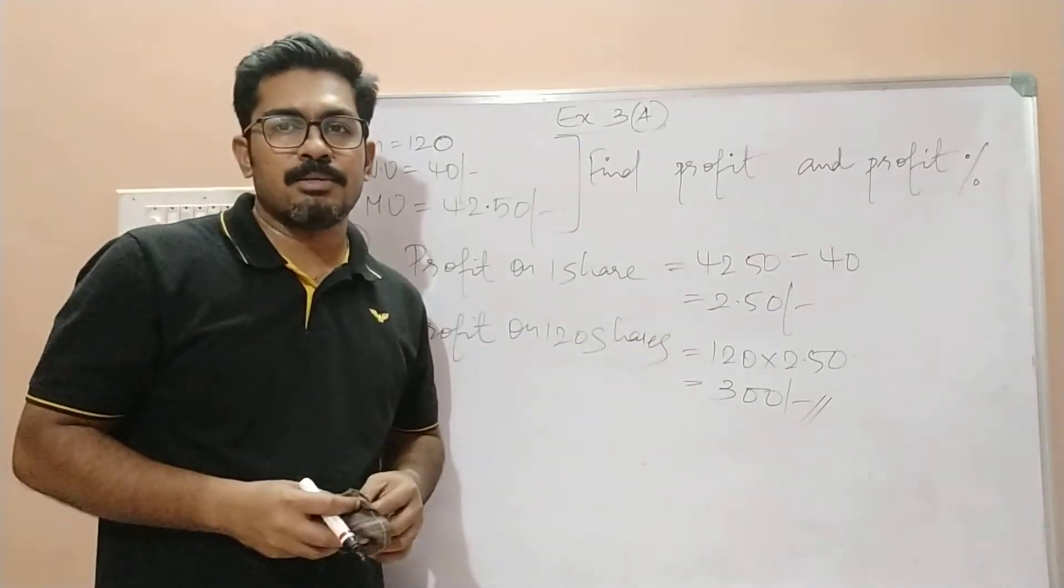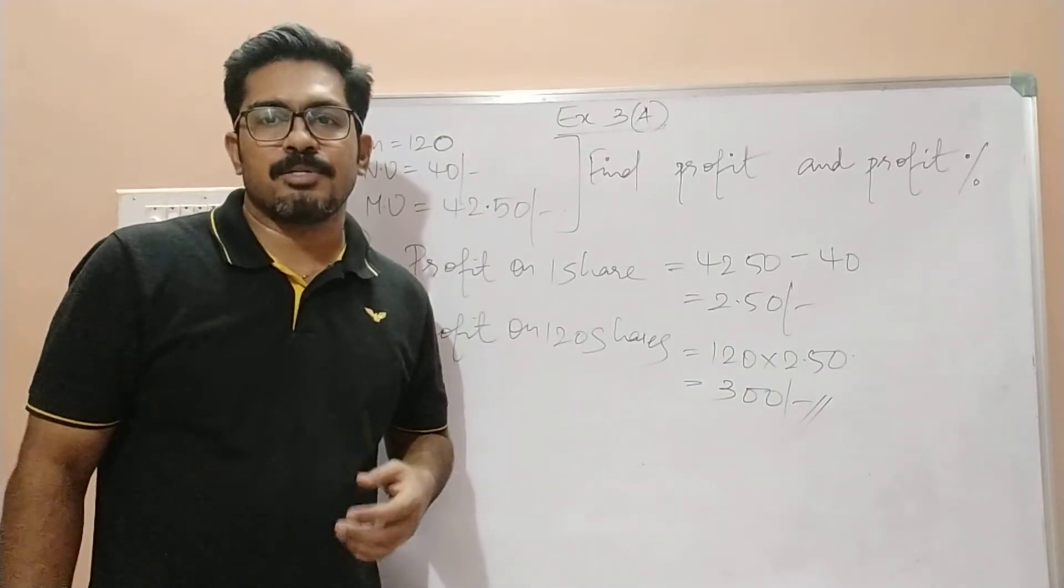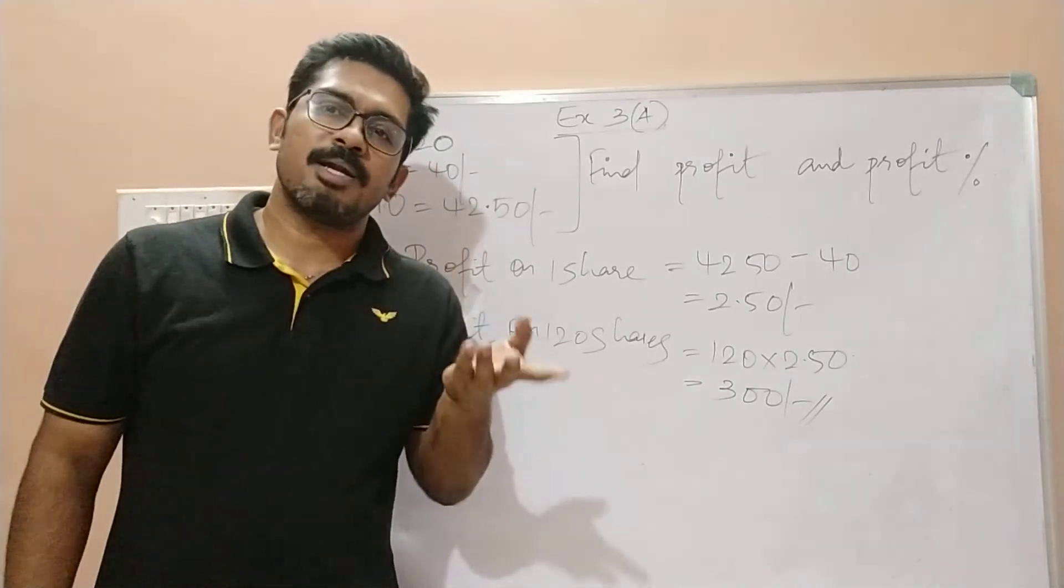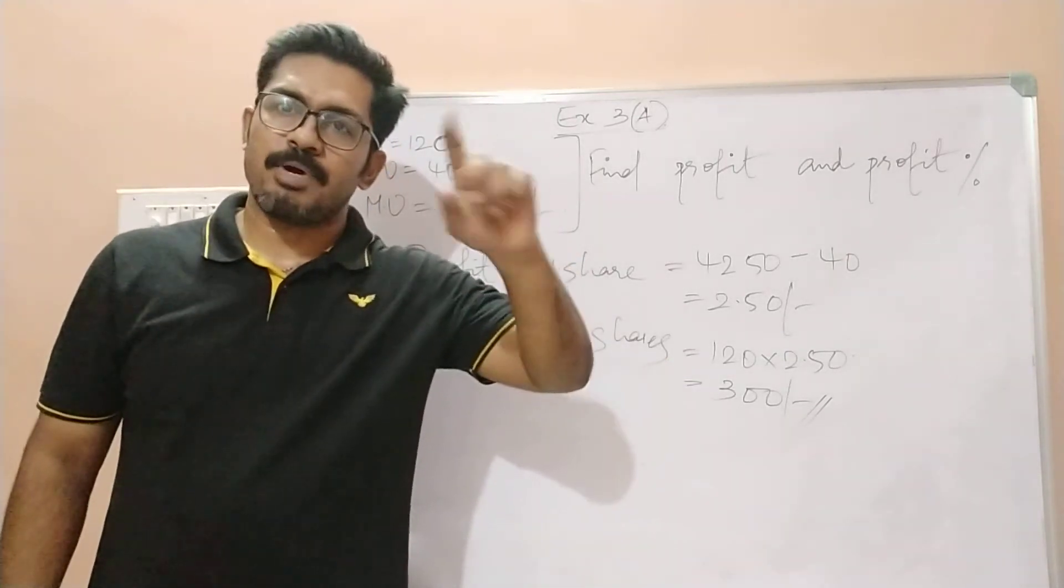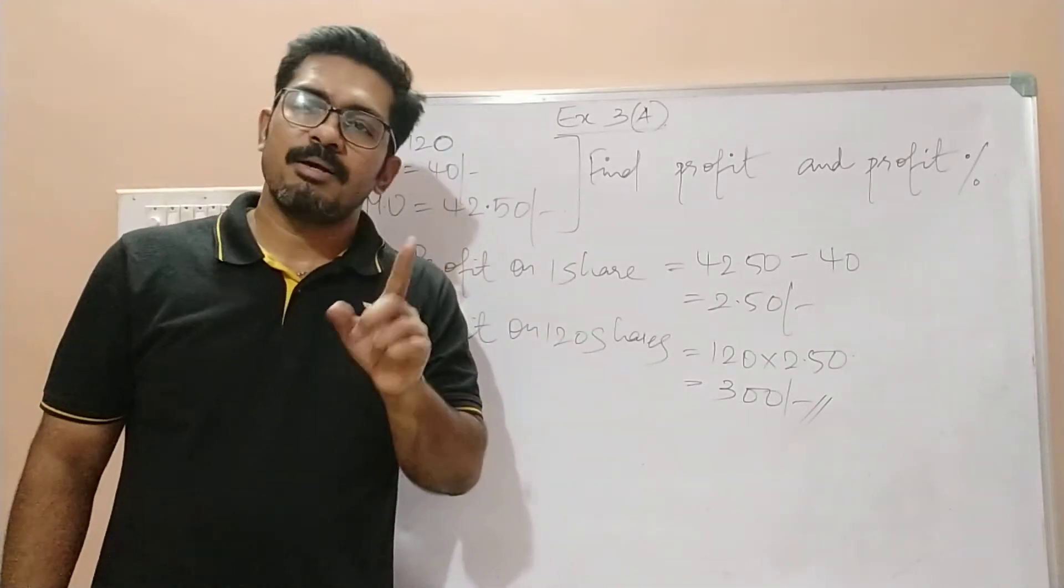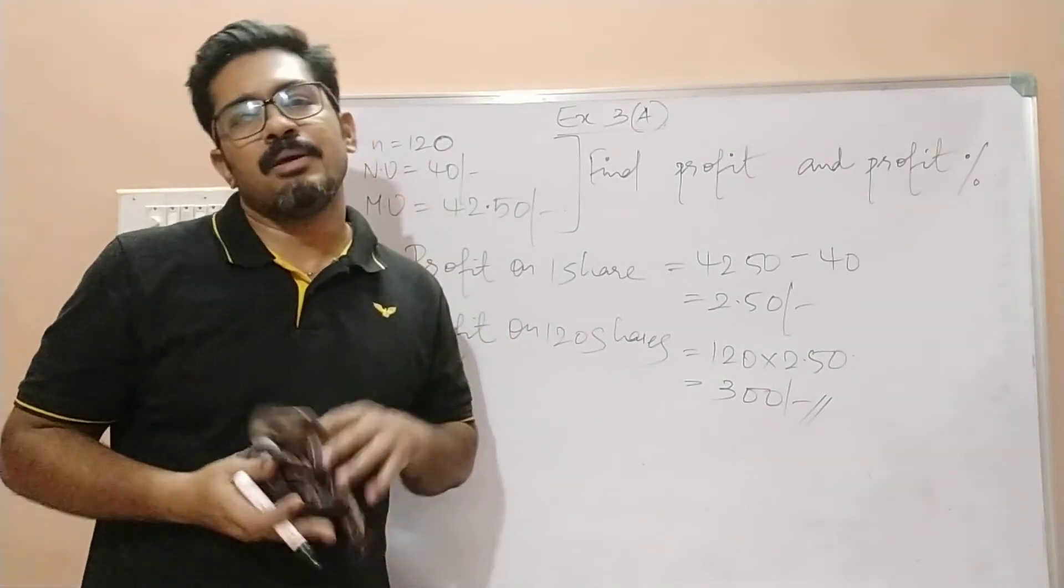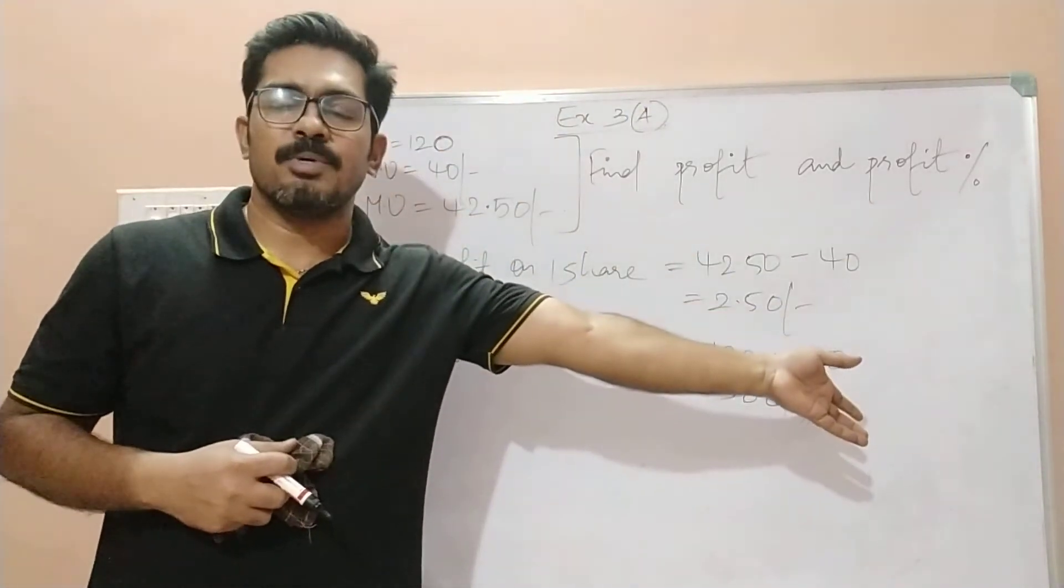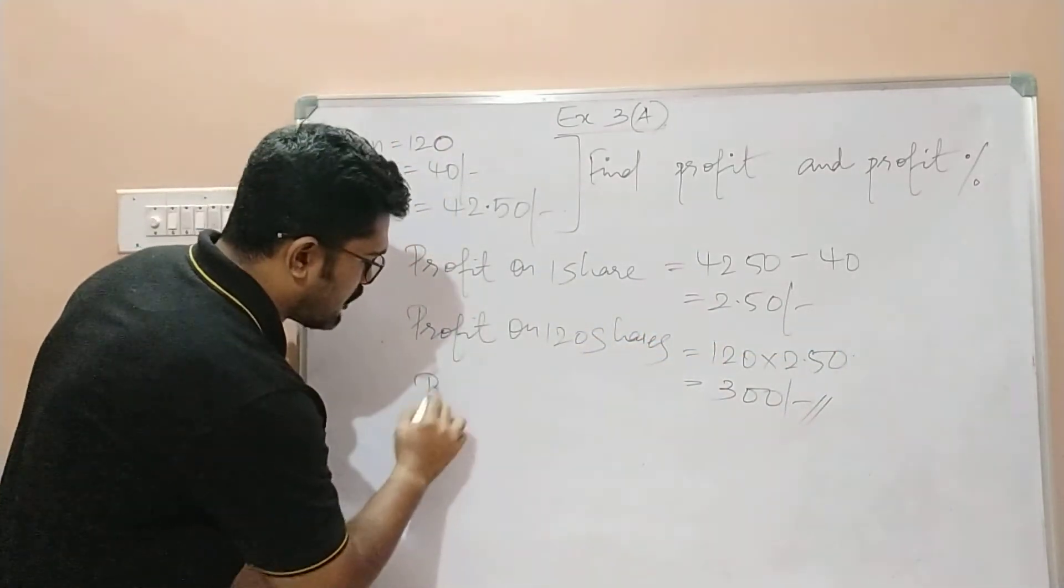Now I have to also find the profit percentage. Children, assume that this was a profit and loss chapter. In that case, if I ask you to find the profit percentage, how do we find it? Profit percentage is equal to profit divided by the cost price multiplied by 100. Here what we can do is we can take the profit of one share divided by the nominal value or the cost price of one share multiplied by 100. I am just comparing this chapter shares and dividends with profit and loss chapter so that you can easily relate it which we have already learned in our lower classes like class seven, eight and nine.